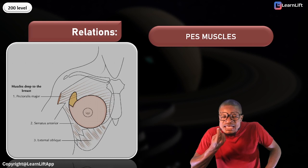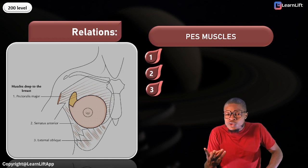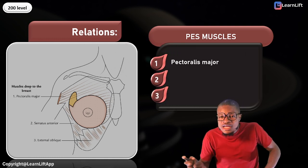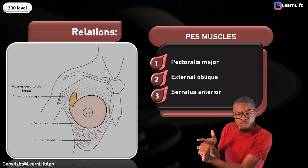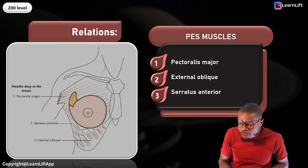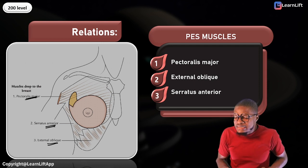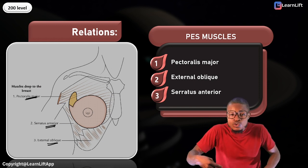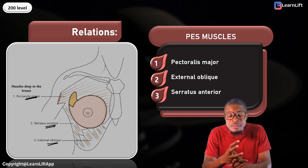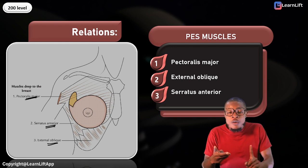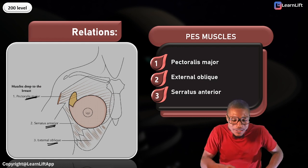The three muscles among the relations are called the PES muscles. The PES muscles are: number one, pectoralis major; number two, external oblique; and number three, serratus anterior. So in total, the five relations of the breast from superficial to deep are: retromammary space, pectoral fascia, pectoralis major, external oblique, and serratus anterior.